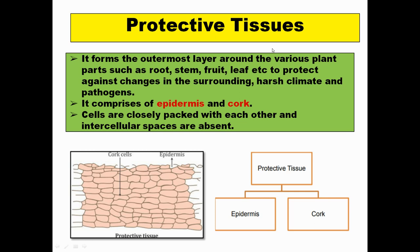Now comes to protective tissue — another type of permanent tissue. These are protective in nature and form the outermost layer around various plant parts like root, stem, and leaves. They protect the plant body from surrounding harsh climate or pathogens. They are basically of two types: epidermis and cork. Cells are closely packed with each other, and intercellular spaces are completely absent.